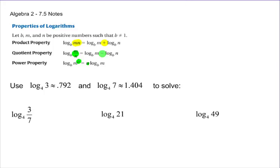With some examples here, let's look at this log base four. I've got three divided by seven. I'm told what log three is and I'm told what log seven is, both of those are base fours.